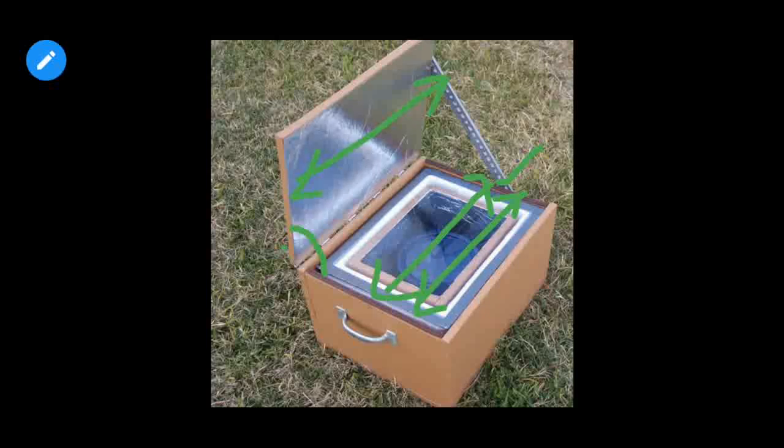In case we need to use a solar cooker for grilling and frying, we need higher temperature. If we have to grill something or fry something, we need higher temperature. In that case, we can replace plane reflectors by spherical reflectors.